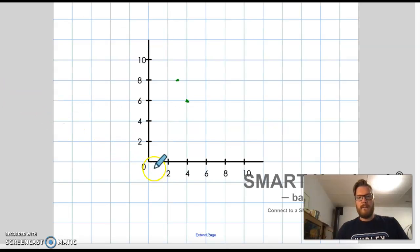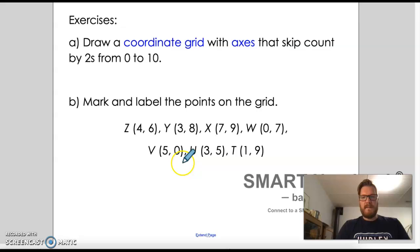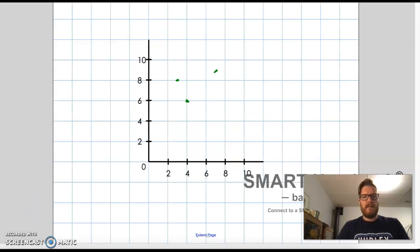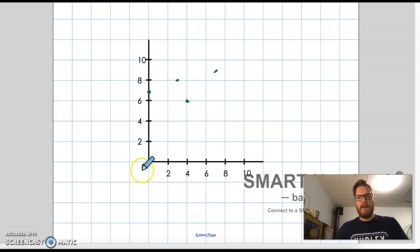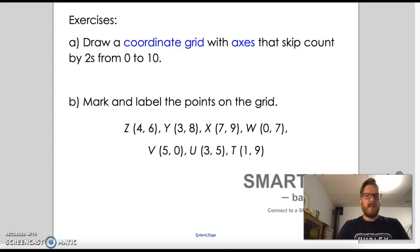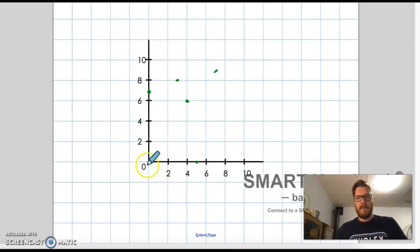The next one is seven, nine. So I go over to between six and eight, and then I go up right in the middle there. And the next one here is zero, seven. So I don't go over at all, but I go up right here. And that's where my dot goes. Next one is five, zero. And so I go over to right here and put a dot for five, zero.